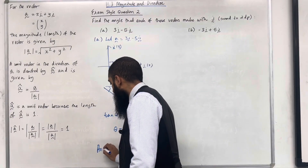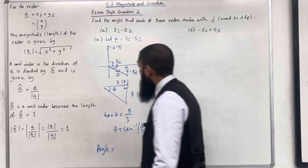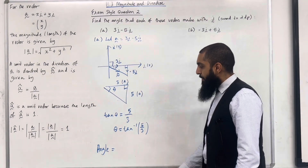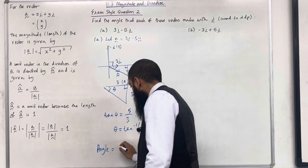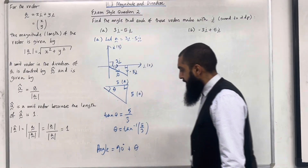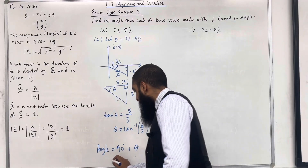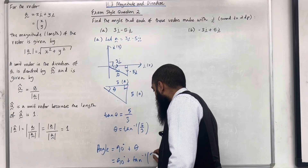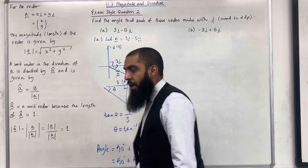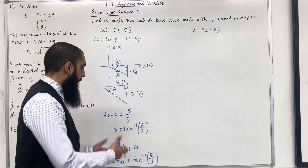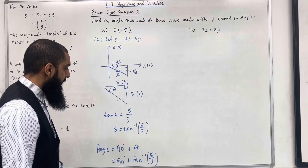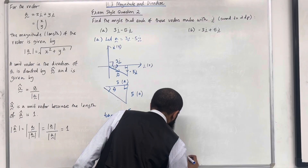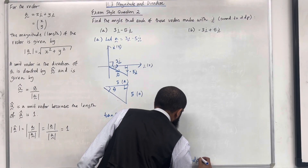The angle between vector A and unit vector j is 90° plus θ, which is 90° + tan⁻¹(5/3). Putting this into the calculator and rounding to two decimal places gives 149.04°.